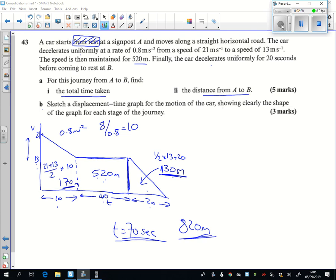Part B says sketch a displacement time graph. Well, we've just drawn a velocity time graph. We're going to do a displacement time graph this time. We know we've got interesting points, don't we?